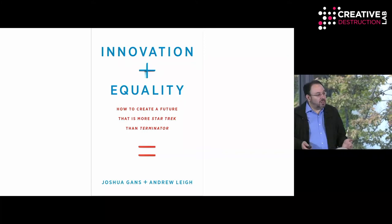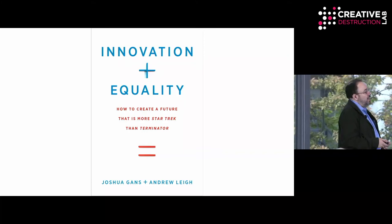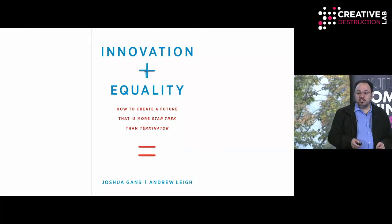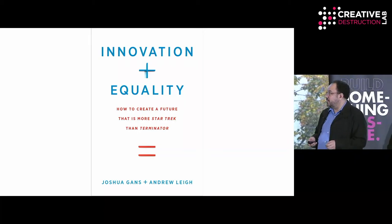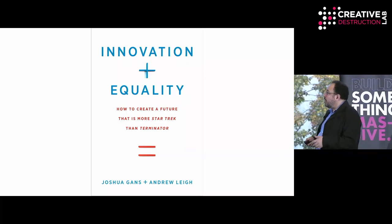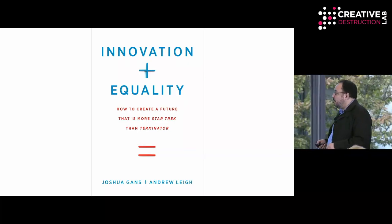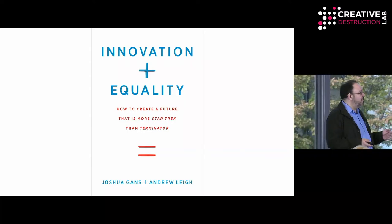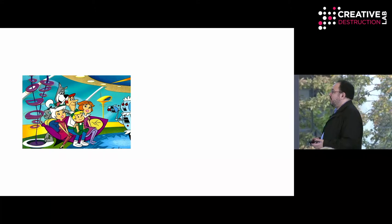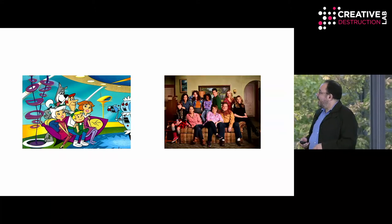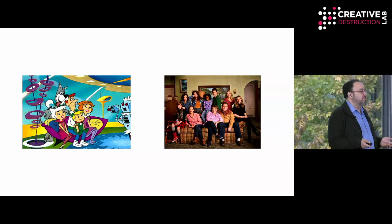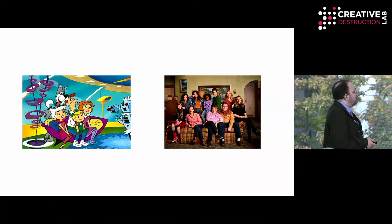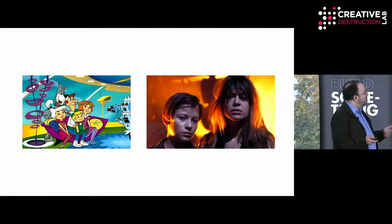The book's entitled Innovation Plus Equality. The reason for the plus is because we don't think there's a big trade-off between these things, as many do. The subtitle is How to Create a Future That Is More Star Trek Than Terminator, so people have now called this the Star Trek book, which is excellent. We initially wanted the subtitle to be How Do You Create a Future That's More the Jetsons Than the Conners, but the publisher said no one remembers who the Jetsons are, which led us to the Star Trek and Terminator analogy.